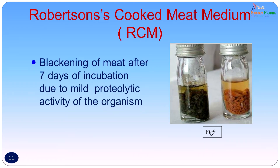The pus was also put into Robertson's cooked meat medium. There was blackening of the meat after prolonged incubation — usually more than 7 days — due to the mild proteolytic activity of the organism. This is compared with reddening of the meat seen in saccharolytic organisms like Clostridium perfringens.